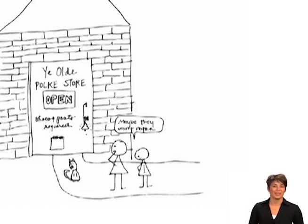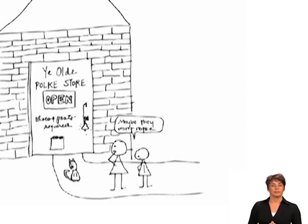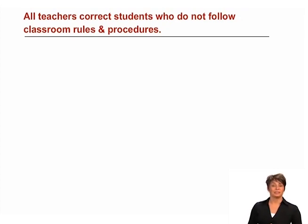We all know that things don't always go smoothly in a classroom. Sometimes students choose not to follow the rules or procedures. How do effective teachers correct students who do not follow the posted and practiced classroom rules? This is our final success indicator. Let's hear what a few teachers have to say about this indicator.